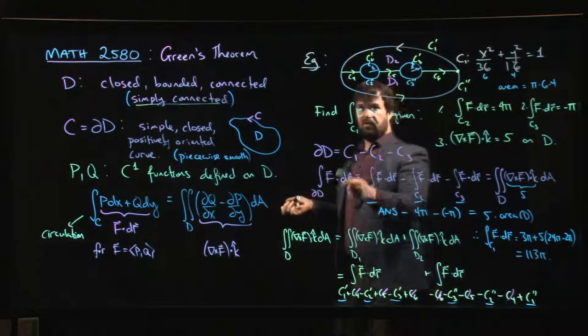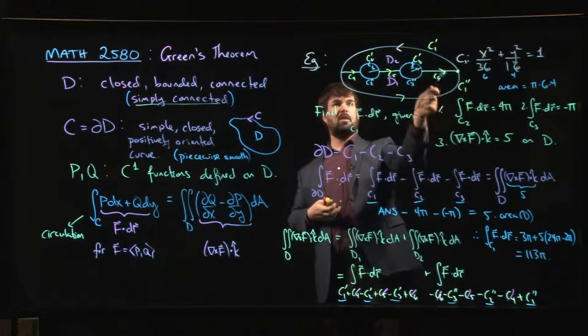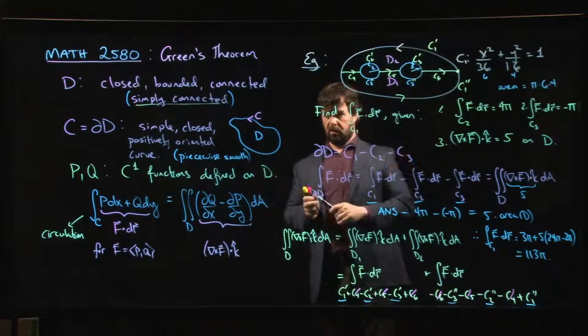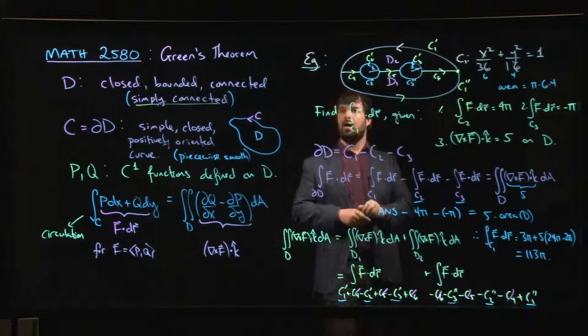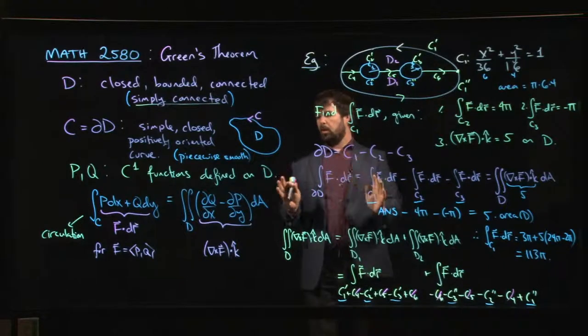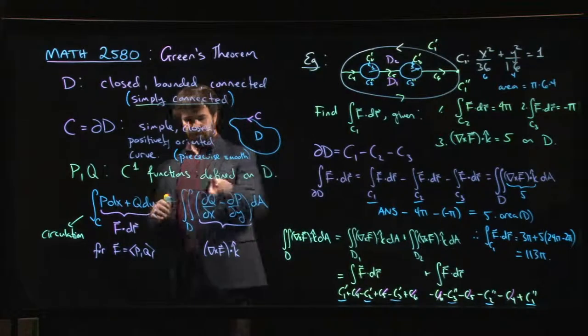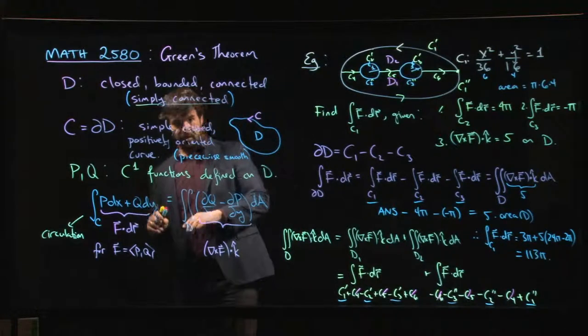Without even knowing what the vector field is, just by knowing some bits of information about it. Saves me the trouble of having to parameterize my ellipse or do anything like that. We'll do one or two more examples with Green's theorem going kind of the other direction using the line integral to compute an area. And then we're going to move on to surface integrals.